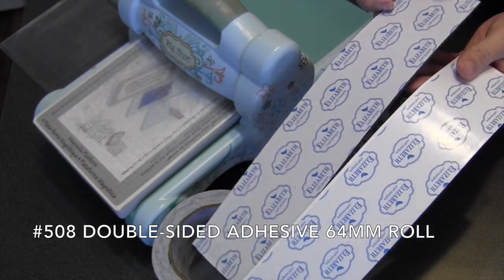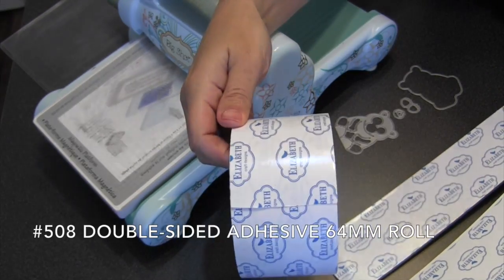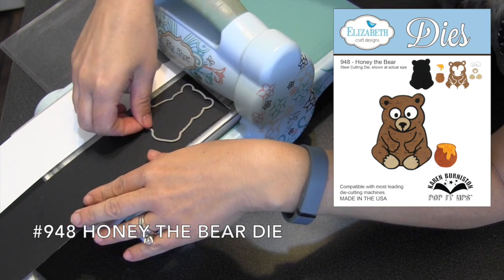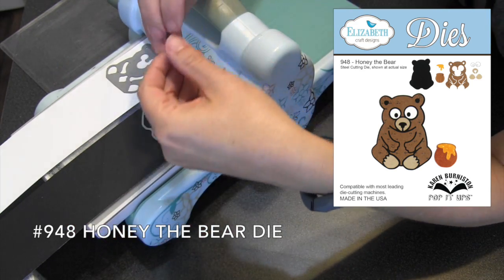You're only going to need black and white cardstock for this bear, but it is easiest if you add the Elizabeth Craft Designs double-sided adhesive to the back of the cardstock before die cutting.